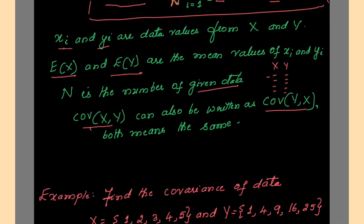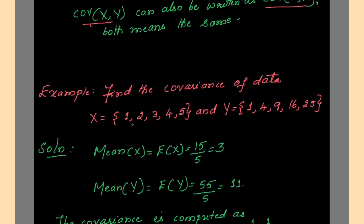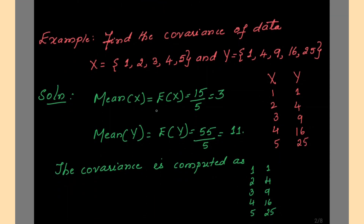The question is: find the covariance of the data where x = {1, 2, 3, 4, 5} and y = {1, 4, 9, 16, 25}. To find this, make use of the formula. First the formula requires the mean of x. The total value of x is 15; there are 5 elements, so 15 divided by 5 gives mean of x = 3. For the mean of y, adding all values gives 55; 55 divided by 5 gives mean of y = 11.